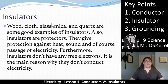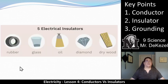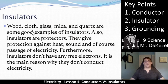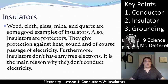Some examples of insulators are given here. You can notice the diversity of them — we have rubber, glass, oil, diamond, and wood. They're all very different compared to conductors, which are all metals. Wood, cloth, glass, mica, and quartz are all good examples of insulators. Insulators are protectors — they protect against heat, sound, and the passage of electricity. That's why we wrap wires in them. Insulators essentially means there's a resistance to the movement of energy.